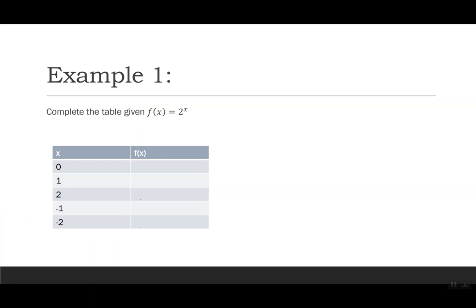Let's look further into this. Let's pick f of x equals 2 to the x and build a table. A quick reminder: anything to the power of 0 is 1 — the only restriction is 0 to the 0. Another reminder: a negative exponent means we write it as a fraction — we flip it over and it goes into the denominator.